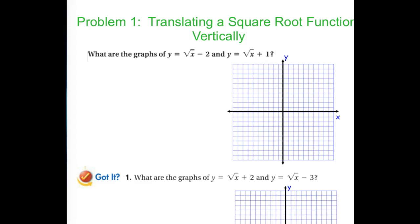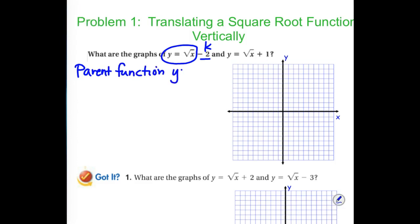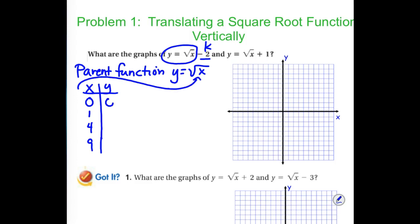Our task today is to look at how we can graph these functions. For y equals the square root of x minus 2, notice the minus 2 is not inside the square root — that is our k value, a vertical shift. We build a t-chart using perfect square x values: 0, 1, 4, and 9, because they square root nicely to 0, 1, 2, and 3.